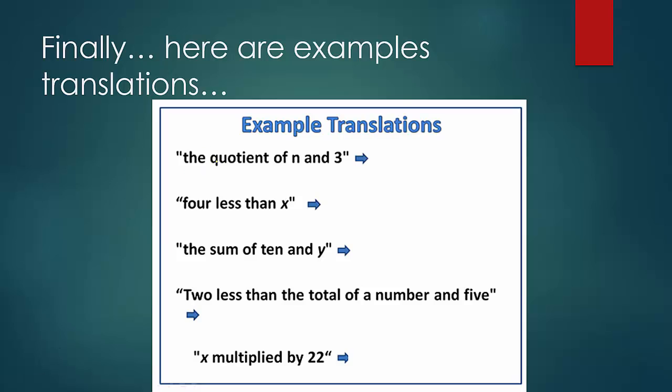And so, here are some example translations. So, we've got the quotient. Remember, quotient is division of n in three. So, when you have this, you would just put them in the exact same order. So, that means n divided by three, or n, you know, if this was written as a fraction, you could also write it like that. These two mean the same thing. What we're going to try and get away from is this. Okay, we don't want to do that anymore. Do this instead. But, for less than x, remember, less than, the order swaps. So, x minus four.